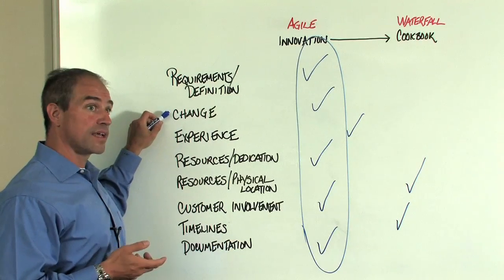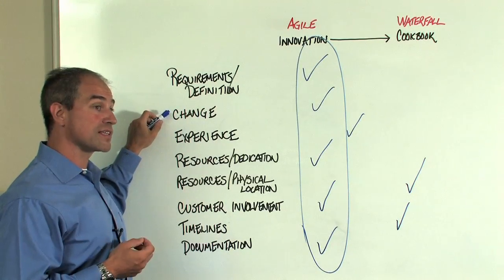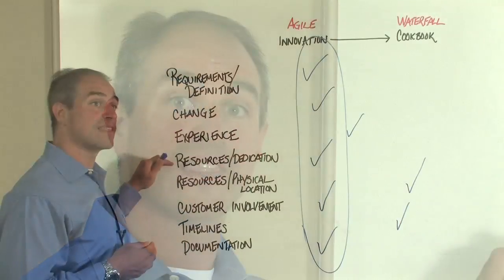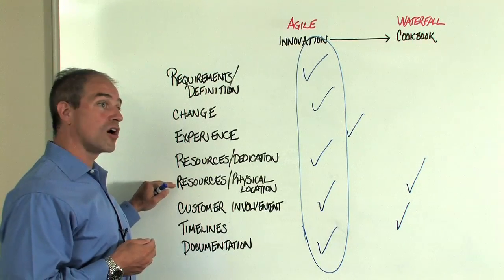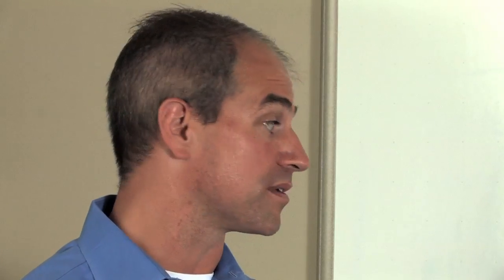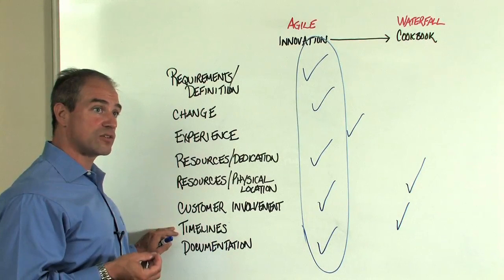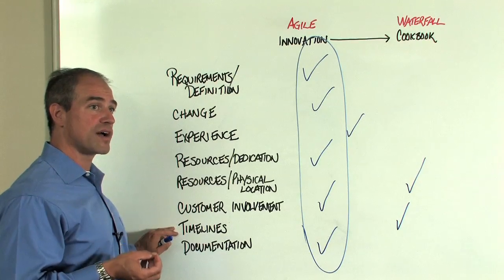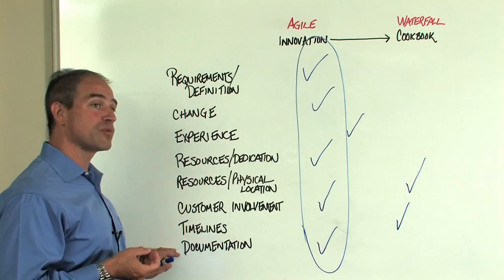Requirements and definition. Is your scope always changing or is it stable? The experience that you have of the solution and of the people on your team. The resources, can they be dedicated to an agile type project? Are they physically located in the same place? Can they be co-located or do you have a distributed network that you have to work with? Customer involvement, can they provide that continuous feedback that's critical to the success of an agile project? The timelines, are they fixed due dates or do we have flexibility in our timelines that we can provide to our customers? And documentation requirements, do we have any compliance or regulatory requirements that restrict our ability to reduce documentation? Or can we start to streamline what we typically see on typical projects?